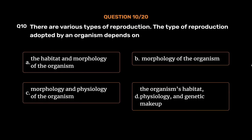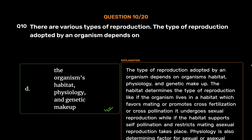The correct answer is Option D: The organism's habitat, physiology, and genetic makeup. The type of reproduction adopted by an organism depends on its habitat, physiology, and genetic makeup. The habitat determines the type of reproduction — if the organism lives in a habitat which favors mating or promotes cross-fertilization or cross-pollination, it undergoes sexual reproduction, while if the habitat supports self-pollination and restricts mating, asexual reproduction takes place.